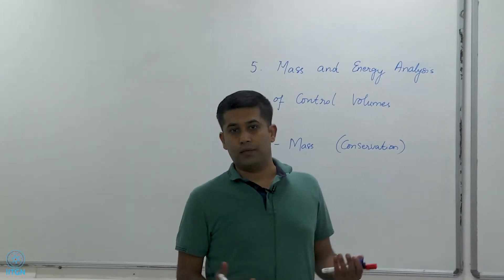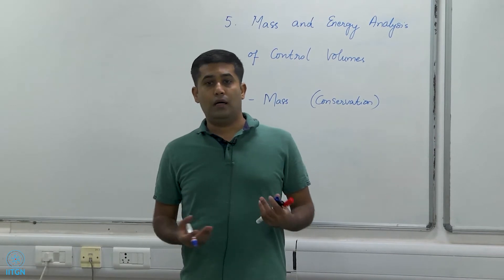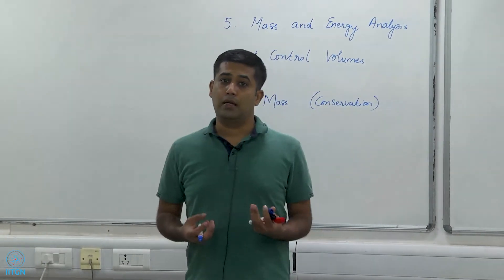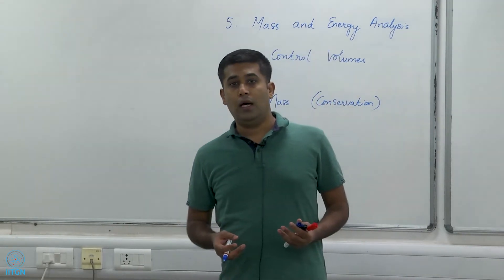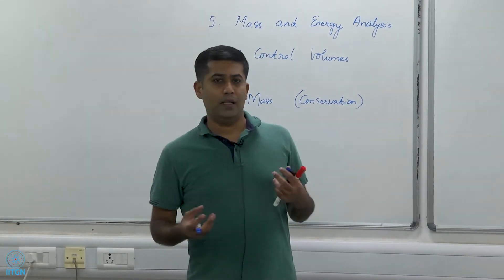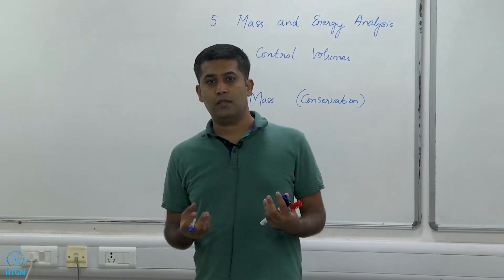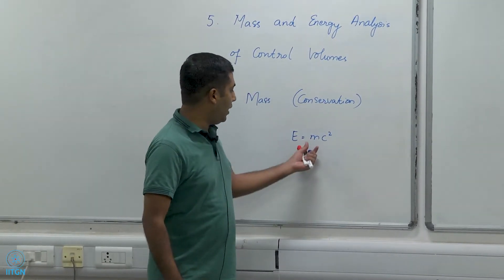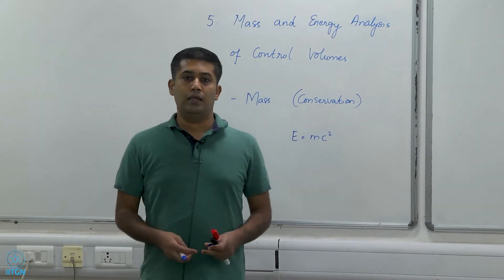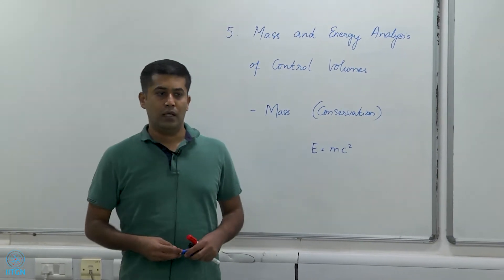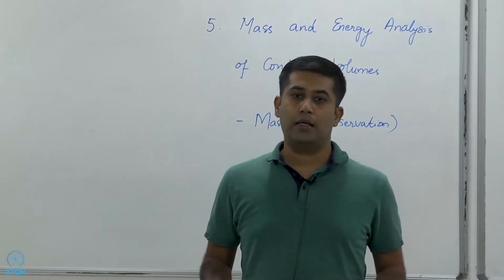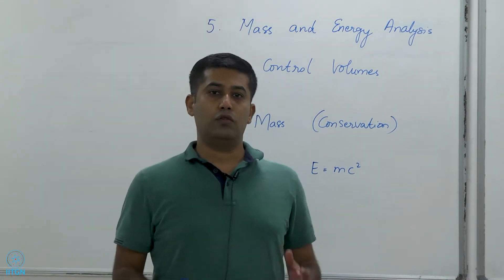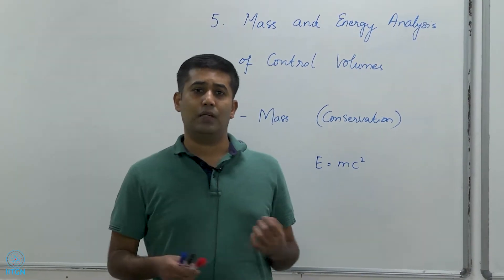In closed systems it is obvious that mass is conserved and that the mass of the system cannot change. But in open systems or control volumes, mass can enter or leave, so we must account for that. One thing to note is that mass can be interchanged with energy via E = mc², where if a mass m is destroyed it results in an energy release E. However, this happens only in very select applications such as nuclear reactors, so for this course we will assume that mass is conserved and cannot directly be converted to energy.